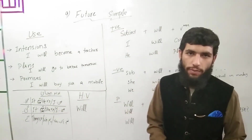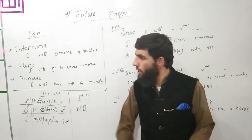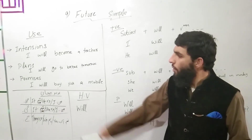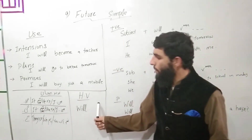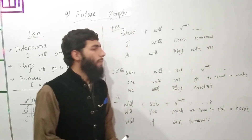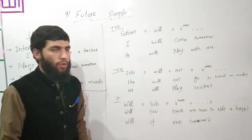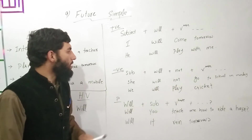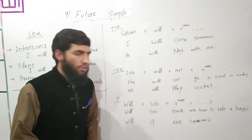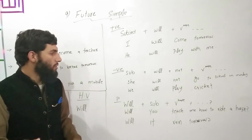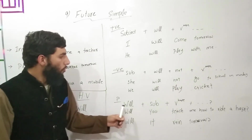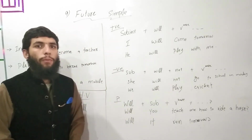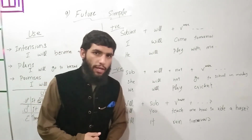That's the future simple tense — covering intentions, plans, and promises. The helping verb is 'will' for all subjects. Positive: Subject + will + verb base form. Negative: Subject + will + not + verb base form. Interrogative: Will + subject + verb base form + question mark. That's it for today, inshallah. See you in the next video. Bye!